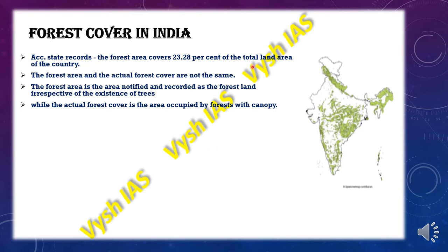To give a simple example — imagine trees compared to an umbrella. The top layer of the umbrella is an inverted U shape and it has a holding stick. Similarly, the actual forest cover is this canopy, the top part of the umbrella, and the forest area is the bottom part of the stick, which is that smaller region.